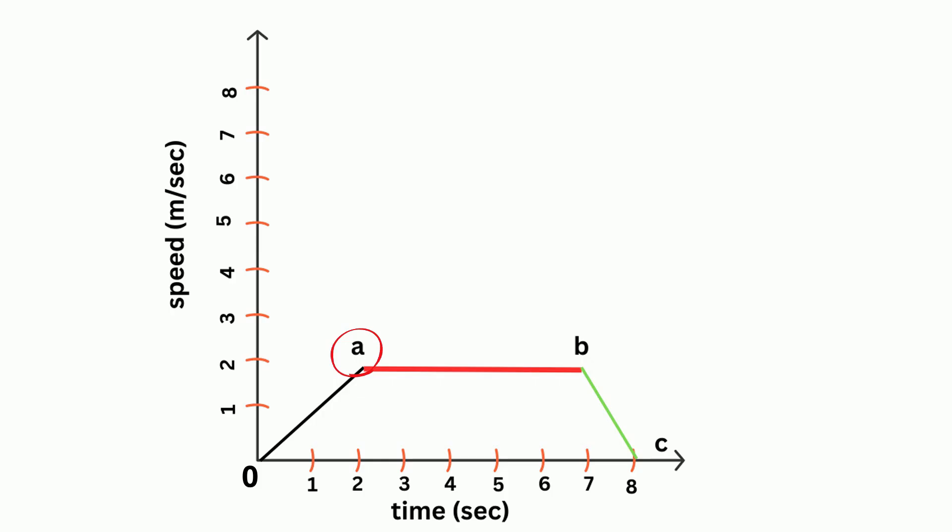Now from a to b, notice that you do not have any acceleration. It is just constant speed. So in order to find the speed, you just look at the y-axis and that would be two meters per second. It's not accelerating.